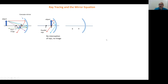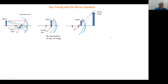Now let's see what happens when the object is between the vertex and the focal point. A ray parallel to the principal axis is reflected toward the focal point; a ray going to the vertex is reflected with the same angle. In this direction the two rays diverge and never meet. But if we trace them backward, they look to meet at a position behind the mirror — that is the image position. The image is virtual because no real light goes behind the mirror to form it.